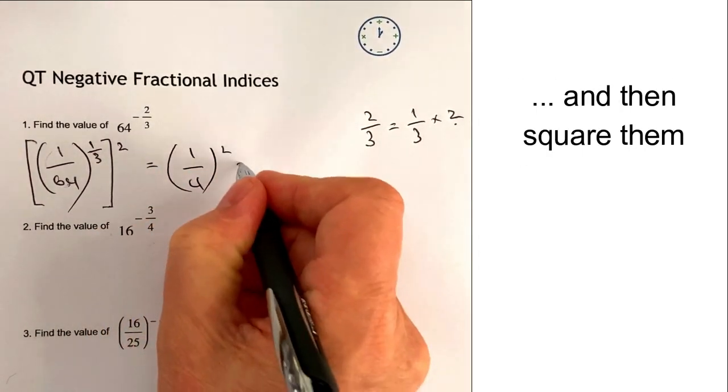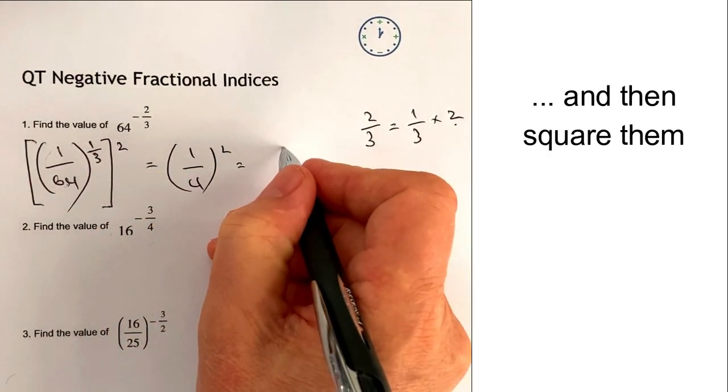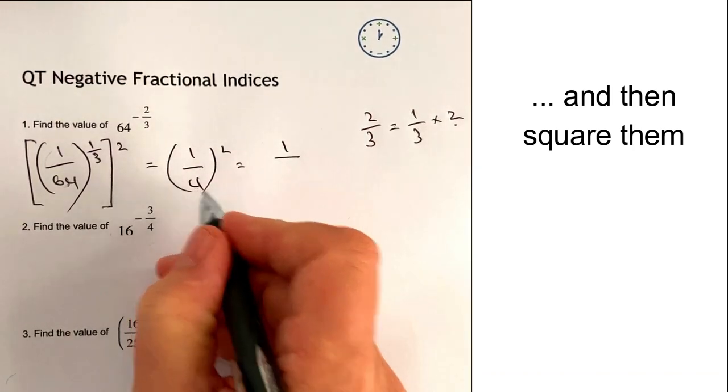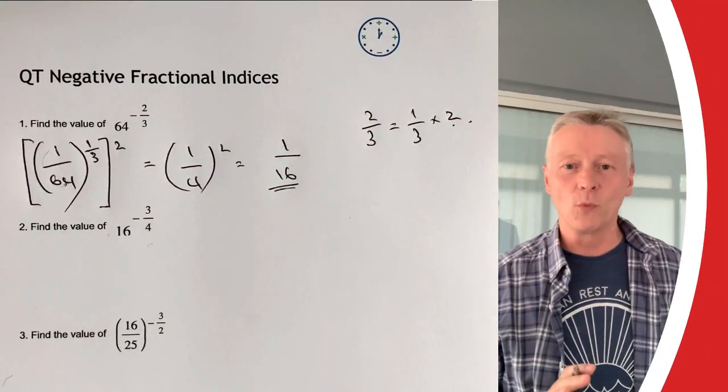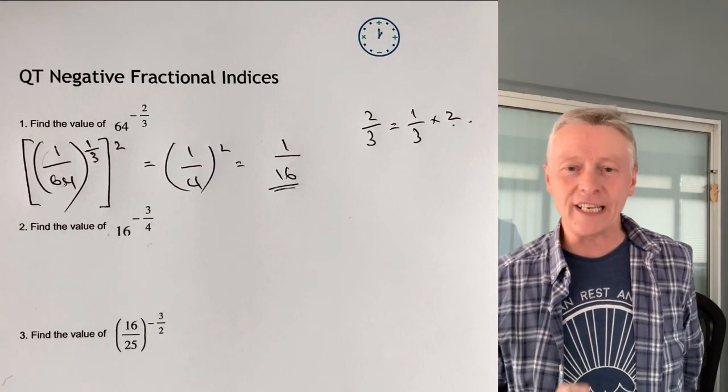And then I can just square it, so my final answer is going to be 1 squared is 1 and 4 squared is going to be 16. Now essentially that's the way in which we're going to approach each of these individual problems.